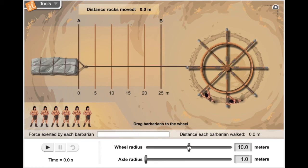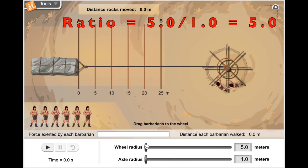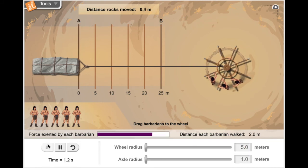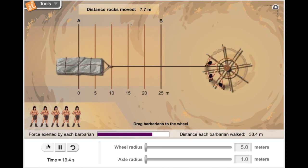Let's try making the wheel radius smaller. Let's make it 5. Now, the wheel-to-axle ratio is 5. Two barbarians cannot push this. It takes three barbarians now to push this load.